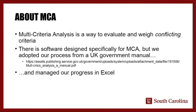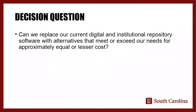This is the question we asked: Can we replace our current digital and institutional repository software with alternatives that meet or exceed our needs for approximately equal or lesser cost? It's a question that probably all of us are asking, at least in the backs of our institutional minds. But it was made more urgent this year because of the budgetary crisis associated with COVID-19. We're under pressure to make cuts where we can. We currently use Contentium and Digital Commons, and we decided to consider them together since they seemed the main way we could effectuate savings.